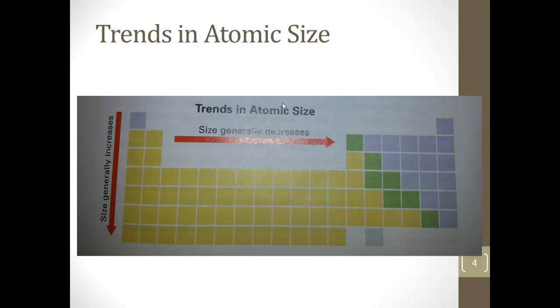So if we look at a picture here, trends in atomic size: as you go across, the size generally decreases. As you go down in the group, row to row to row, the size generally increases.